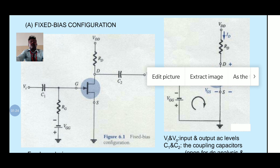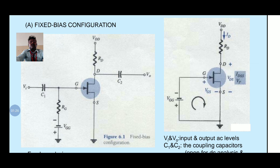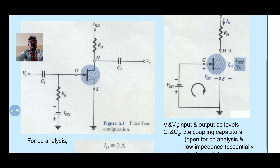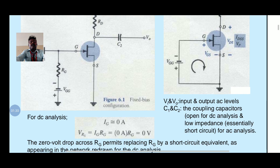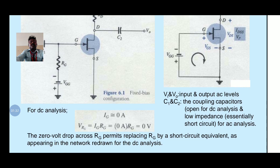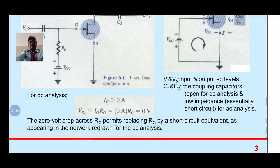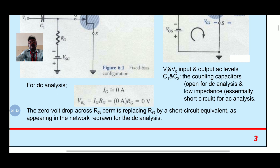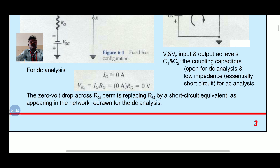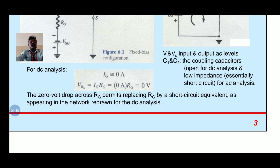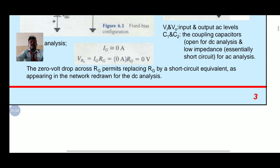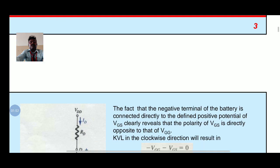In the fixed bias configuration, the diagram is shown here. V1 and V2 are the input and output AC levels, and C1 and C2 are the coupling capacitors. For DC analysis, IG equal to 0 amps, and IG into RG equal to 0, so the voltage drop across RG is zero, permitting replacing RG by a short circuit equivalent as appearing in the network for DC analysis.